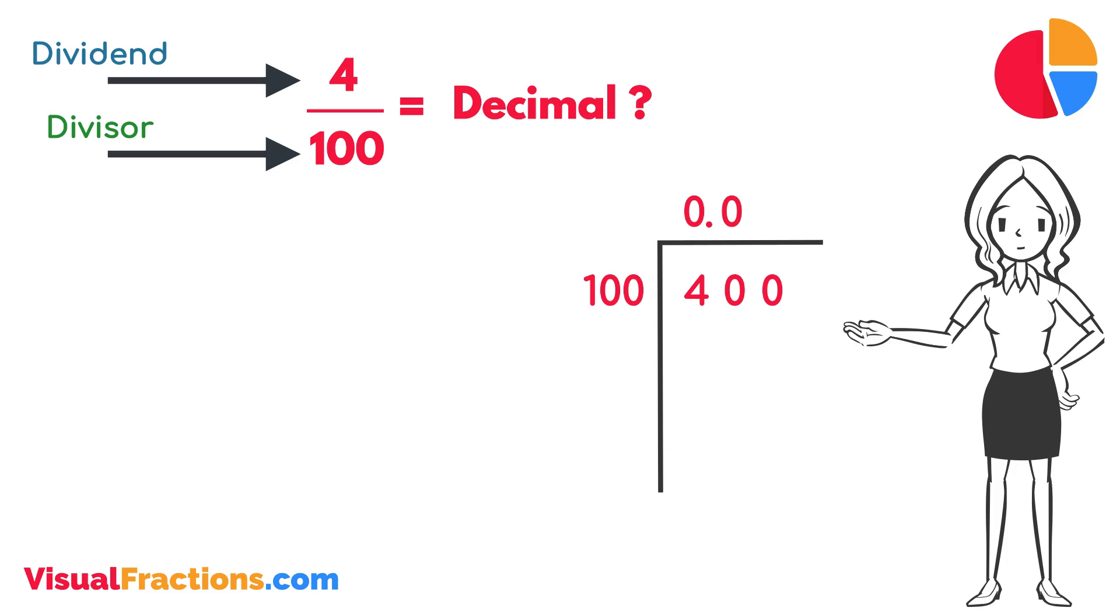How many times does 100 go into 400? Exactly 4 times. We write 4 after the decimal point in the quotient, making it 0.04.